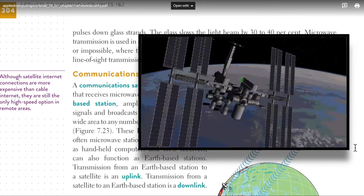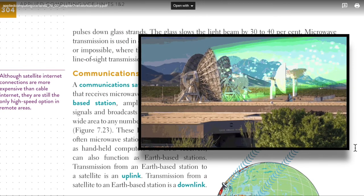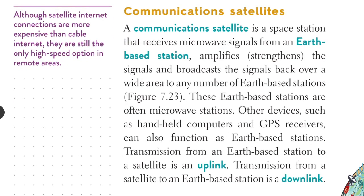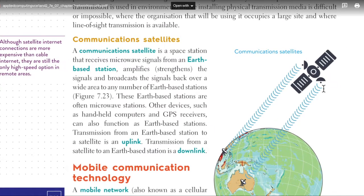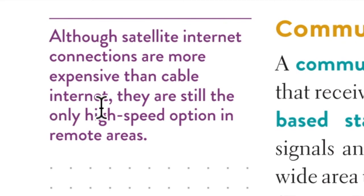A communication satellite is a space station that receives microwave signals from an earth-based station. It amplifies or strengthens the signal and then broadcasts it back over a wide area to any number of earth-based stations. Other devices such as handheld computers and GPS receivers can also function as earth-based stations. Transmission from an earth-based station to a satellite is an uplink; transmission from a satellite to an earth-based station is a downlink. Although satellite internet connections are more expensive than cable internet, they are still the only high-speed option in remote areas.